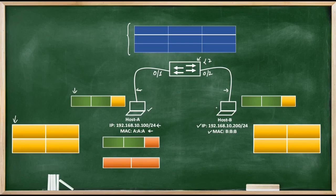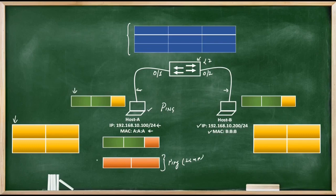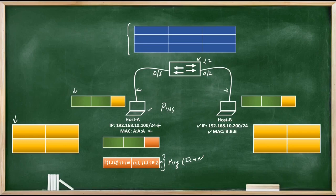What we need to understand here is how Host A can communicate to Host B. We are going to use the ping utility to test the connectivity between these two hosts. If you write ping 192.168.10.200 on Host A, it will create an ICMP echo packet with source address 192.168.10.100 and destination address 192.168.10.200, and send it towards Host B. Host A then starts listening for an ICMP echo reply from Host B.